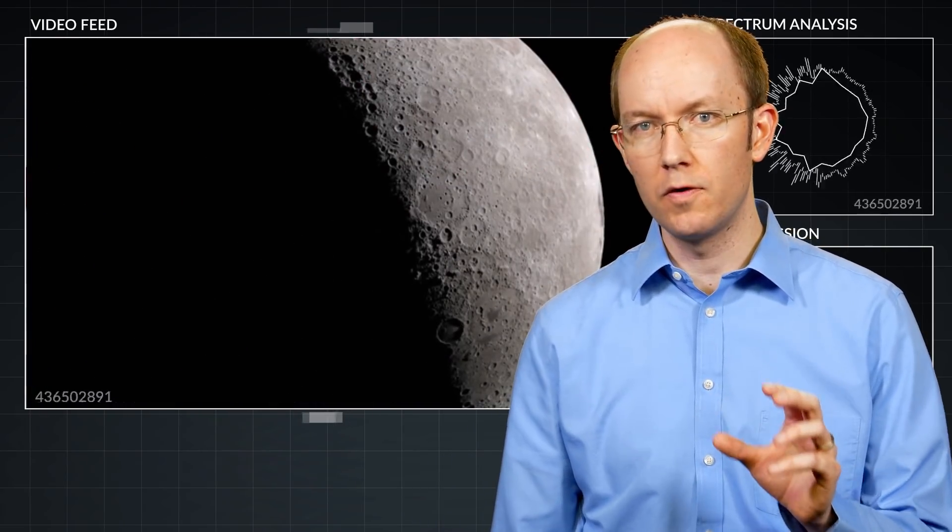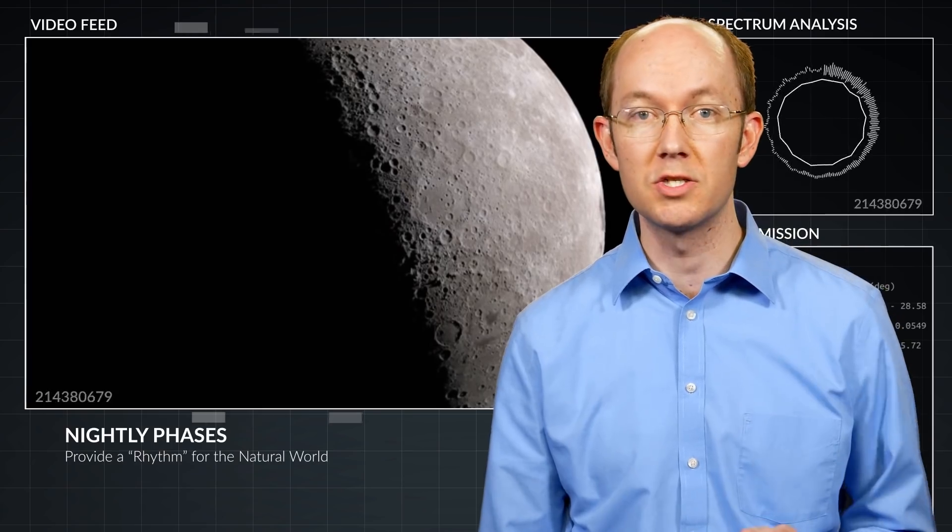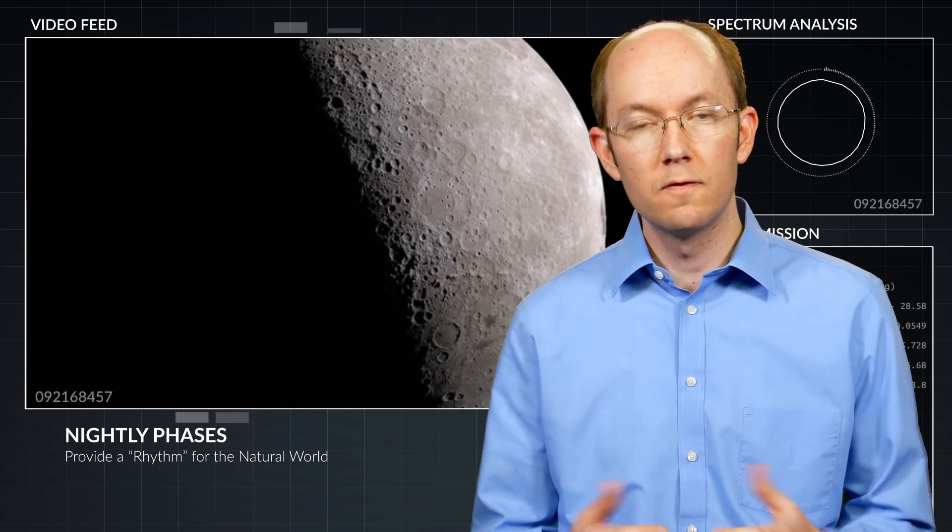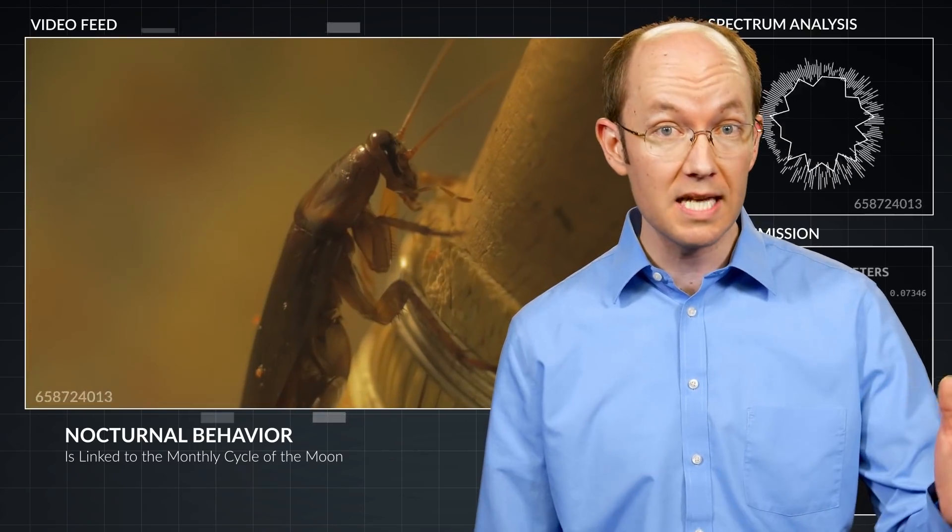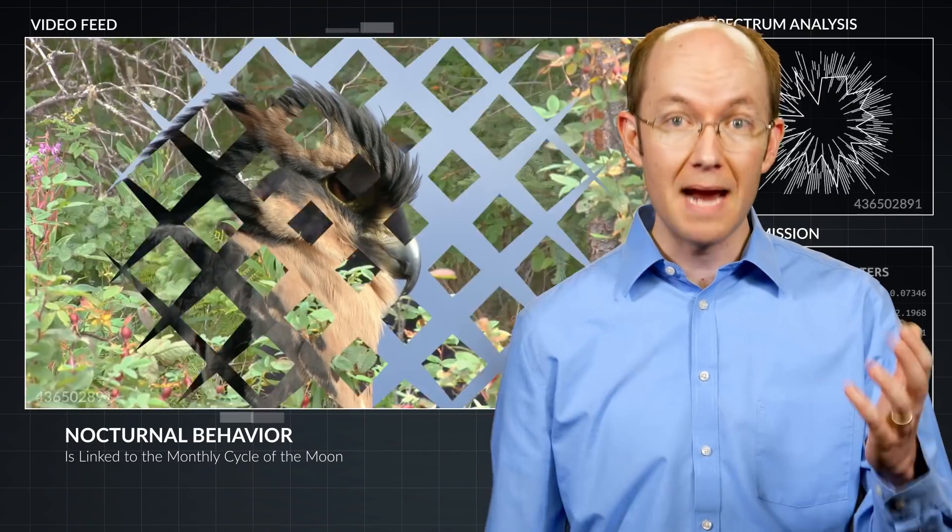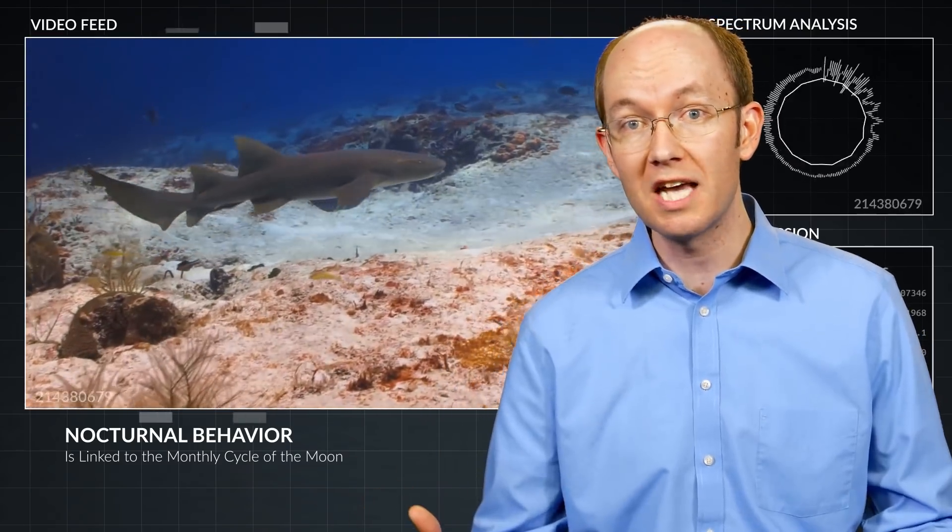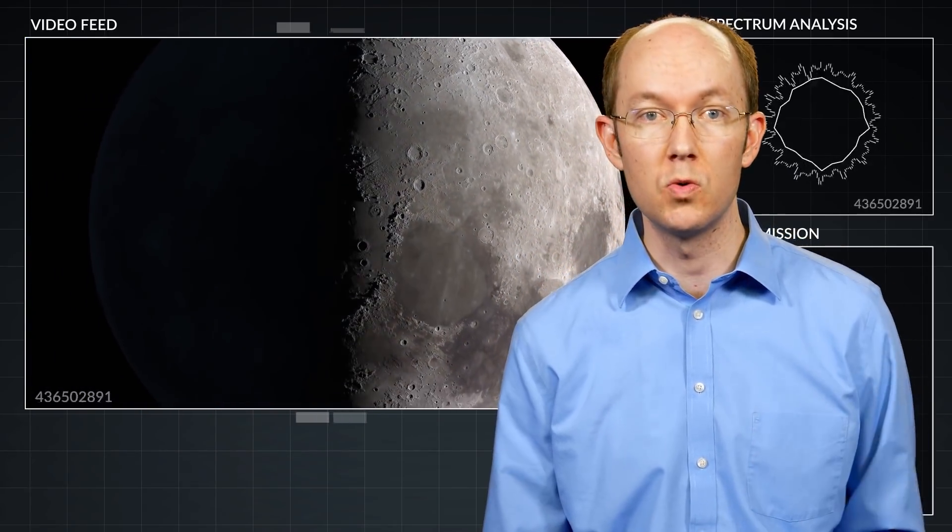At a more basic level though, the moon's nightly phases serve as a rhythm for the natural world. Nocturnal behaviors of animals from insects to birds to mammals to even marine species have been linked to the monthly cycle of the moon.